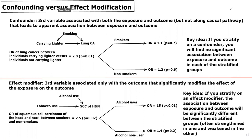As we discussed in a previous lecture on biases, a confounder is a third variable that is associated with both the exposure and outcome, but not along the causal pathway that leads to an apparent association between the exposure and outcome.